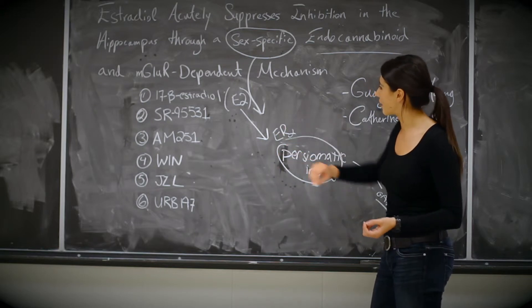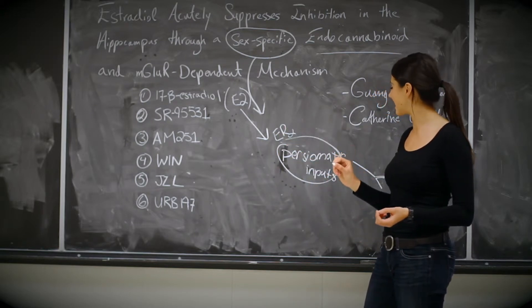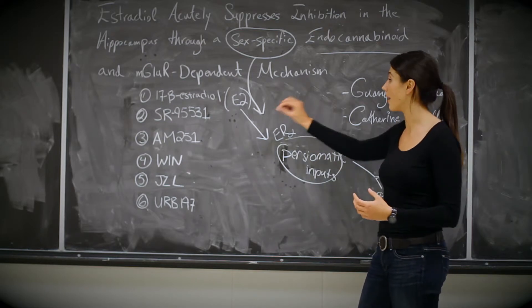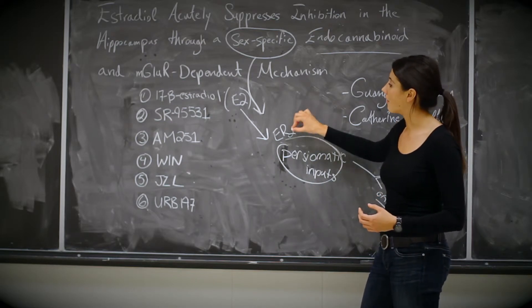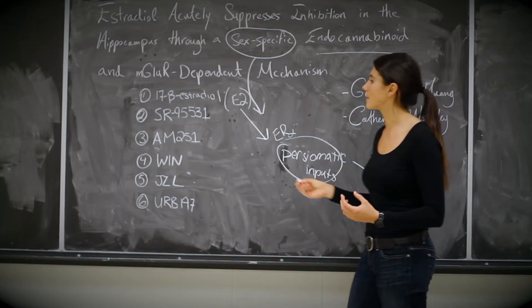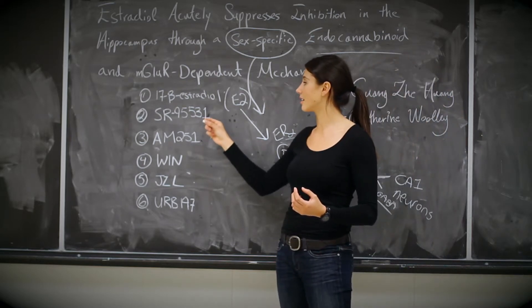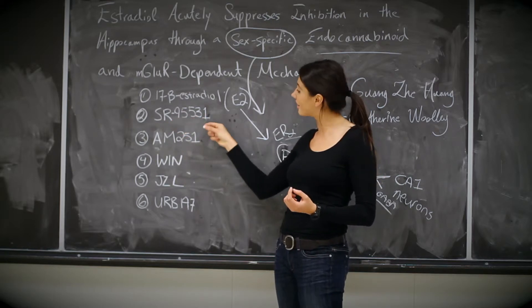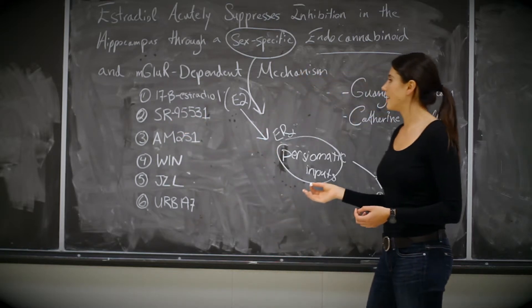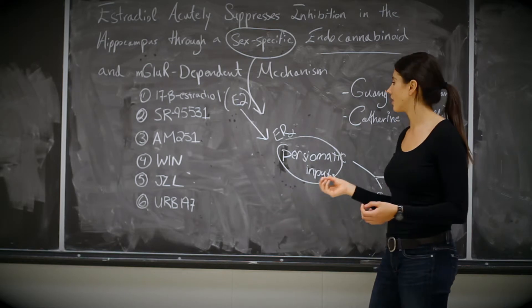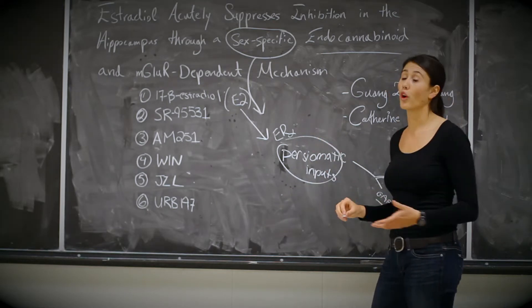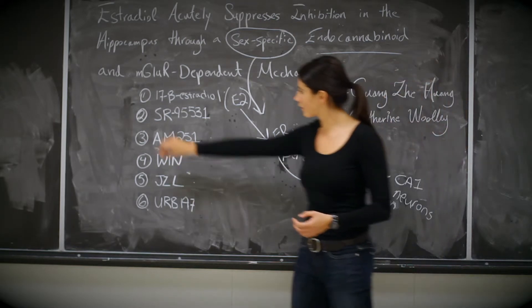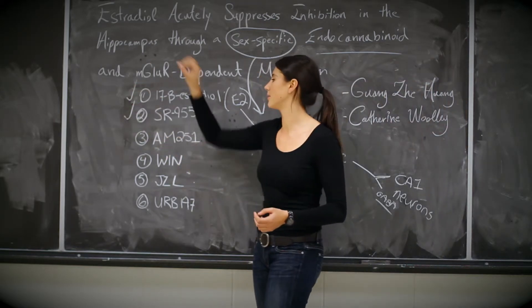And in these estrogen-sensitive cells, they release anywhere from 25% to 70% less GABA upon binding of E2. They realized that these were GABA neurons because they used GABA antagonists known as SRD5531. And when they applied this to hippocampus slices, they realized that this disinhibition no longer occurred. So they realized that it was necessary to have these GABA inputs. So we've gone through point number one and point number two.